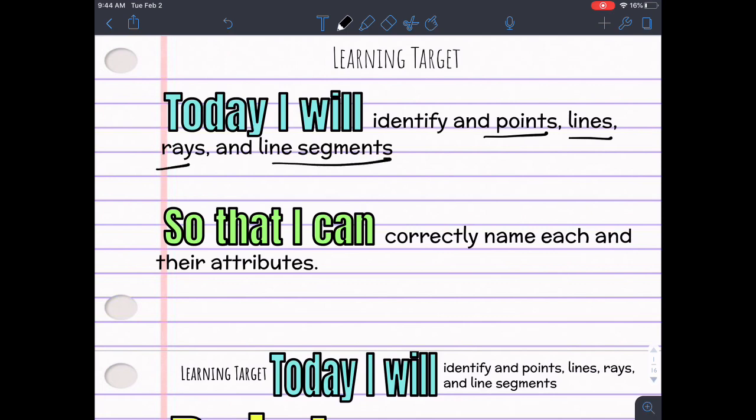We're doing this so that we can correctly name each one and their attributes. Attributes is just a fancy word for characteristics or the details, what makes them.